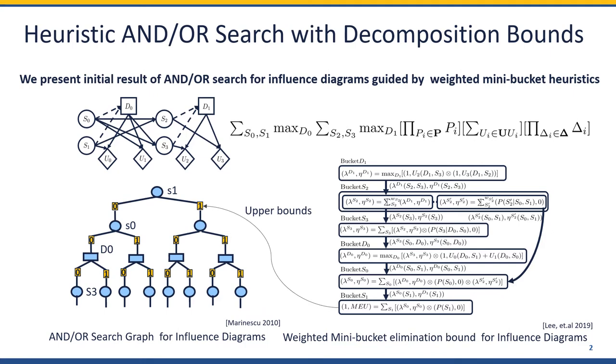In this paper, we first present results of applying annual search for inference diagrams with a heuristic function generated by the weighted mini-bucket bounds. The annual search space for inference diagrams was first presented in 2010 without heuristics. And then more recently, the decomposition bounds for inference diagrams have been developed by extending the techniques in probabilistic graphical models.